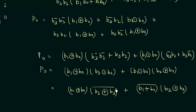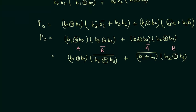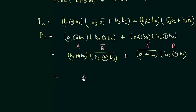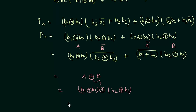Let a = b1 XOR b0, and b = b2 XOR b3. Then we have a·b̄ + ā·b, which is again the XOR operation — so we can write a XOR b. Substituting back: (b1 XOR b0) XOR (b2 XOR b3), which simplifies to b0 XOR b1 XOR b2 XOR b3. This is our P output.